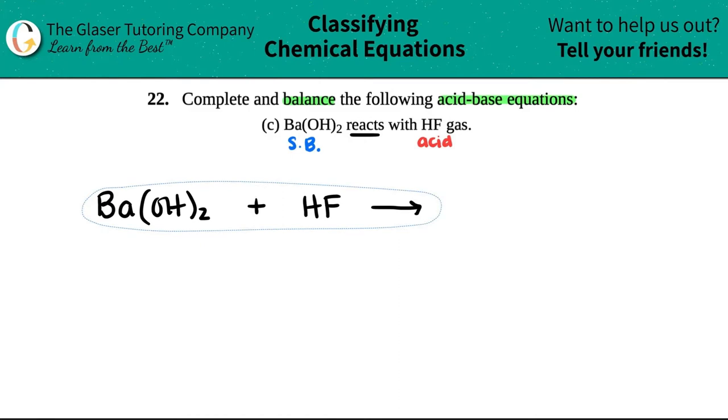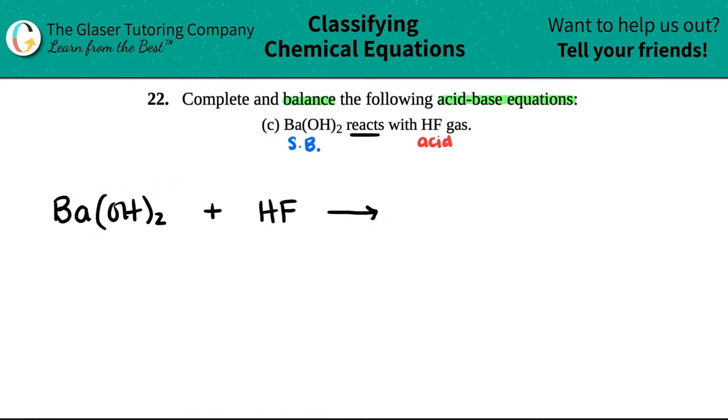The good thing about acid-base reactions is that they're just fancy double displacement reactions. So we're going to be doing this the same way as if we were just doing a regular double displacement reaction. What we have to do is figure out what the two ions were that made Ba(OH)2 and what the two ions were that made HF.